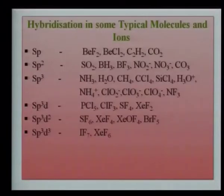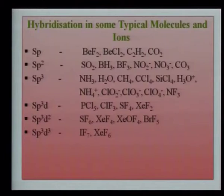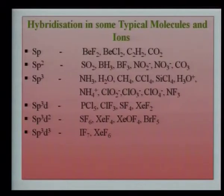A summary of hybridization and geometry: sp = linear (BF₂⁻, BCl₂⁻, C₂H₂, CO₂); sp² = planar triangular (SO₂, BH₃, BF₃, NO₂, NO₃⁻, CO₃²⁻); sp³ includes NH₃, H₂O, CH₄, CCl₄, SiCl₄, NH₄⁺, and all oxy acids of phosphorus; sp³d includes PCl₅, ClF₃, SF₄, XeF₂; sp³d² includes XeF₆, XeF₄, BrF₅; sp³d³ includes IF₇.